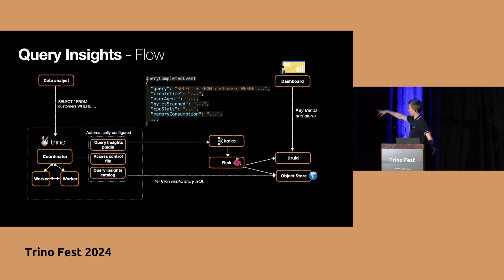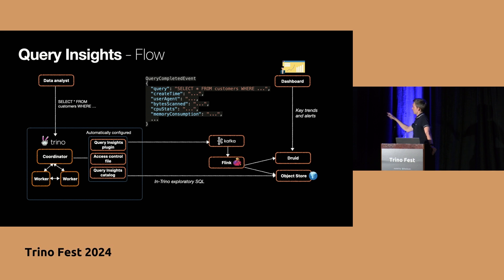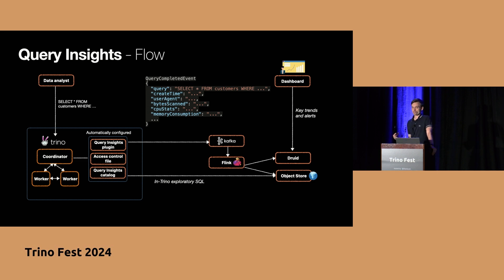We then have an Apache Flink job which listens in real time for incoming events on the Kafka topic, takes the events, does some data transformation and processing, and lands the data into two different places. It lands data into Druid, which we use mostly for low-latency dashboarding. It also lands data into object storage in Iceberg format, which is our long-term durable storage — where we know the data is kept in open formats like Parquet and Iceberg and can be used later for processing.